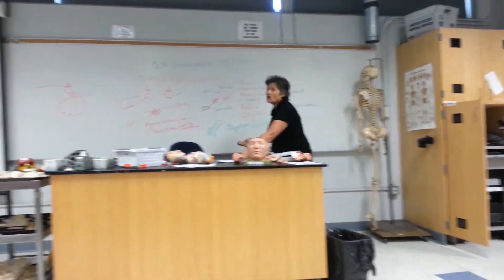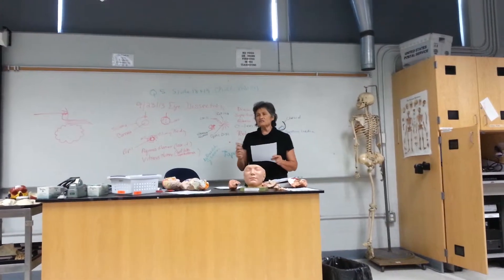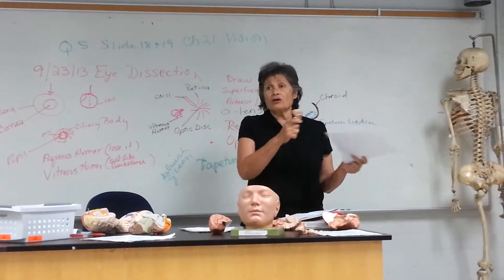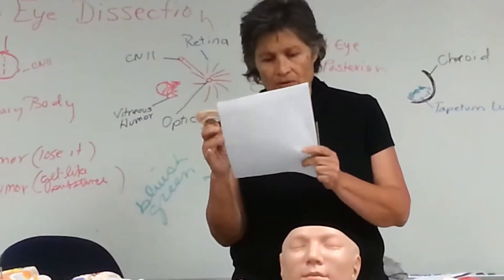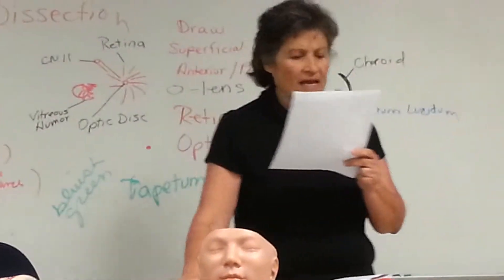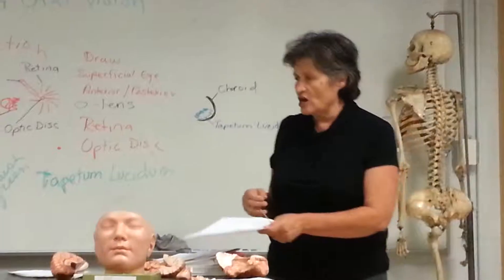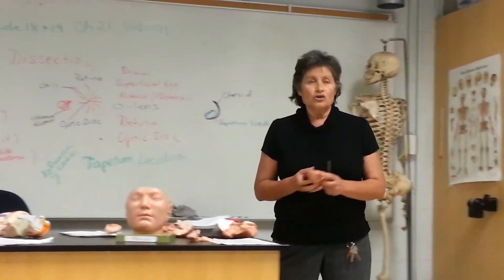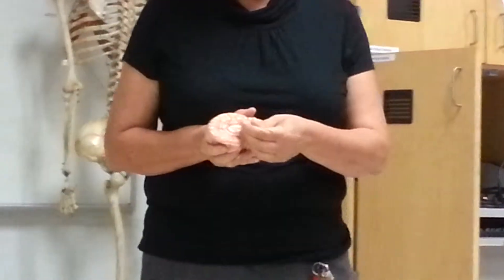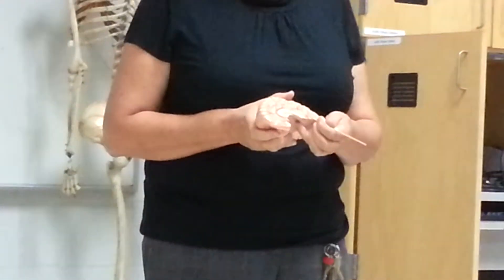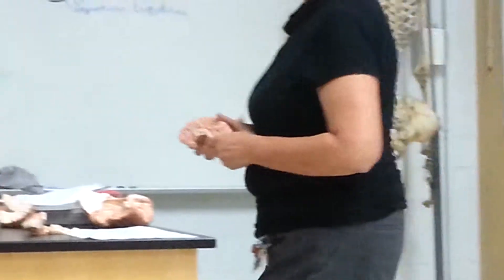This is why I use all the models — to identify specific structures, some are good on one model, some are good on another. The cingulate gyrus: you look for the corpus callosum, and the first ridge above the corpus callosum is the cingulate gyrus.